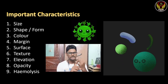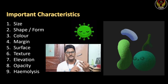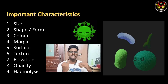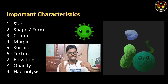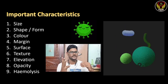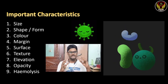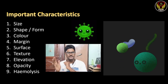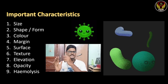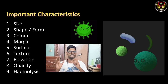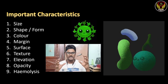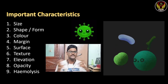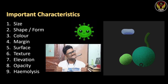The nine parameters are size, shape or form, color, margin, surface, texture, elevation, opacity, and hemolysis. These are the important parameters which have to be included when we observe and write down colony morphology. Every colony description should include these nine important parameters.